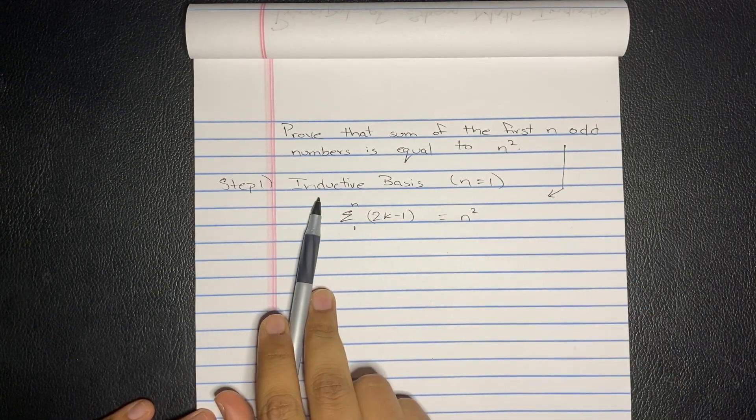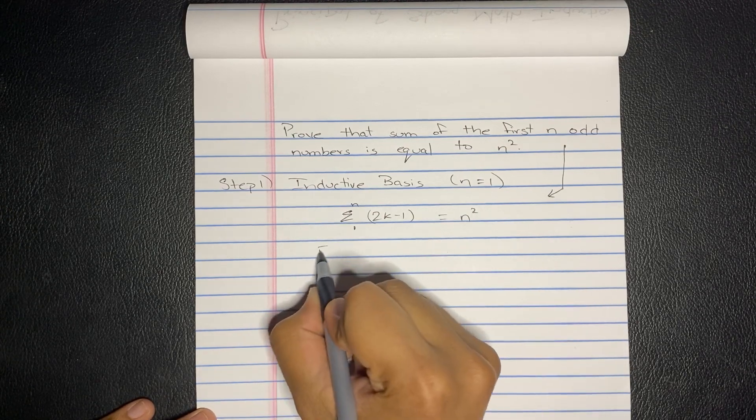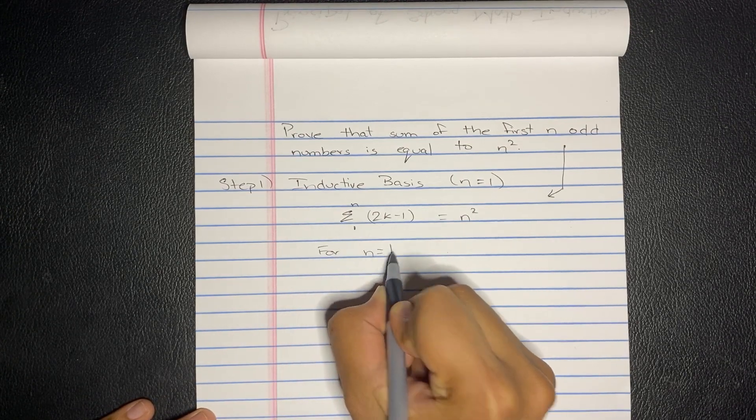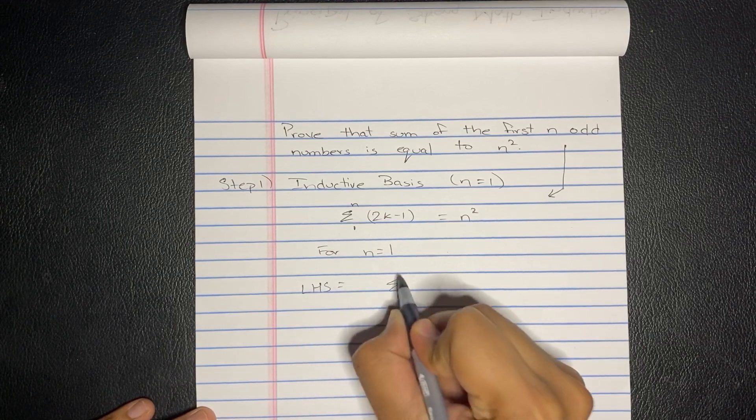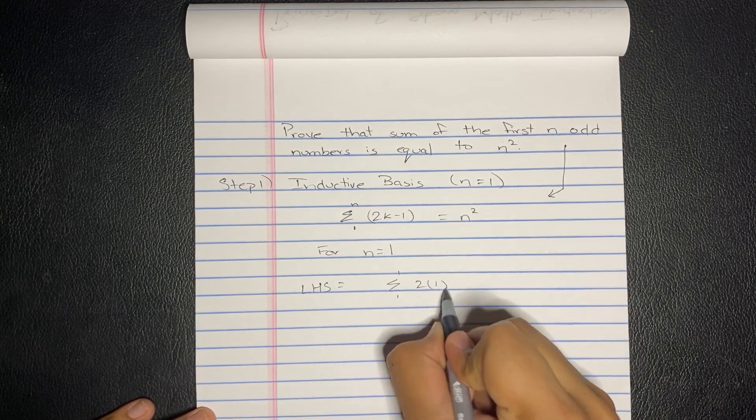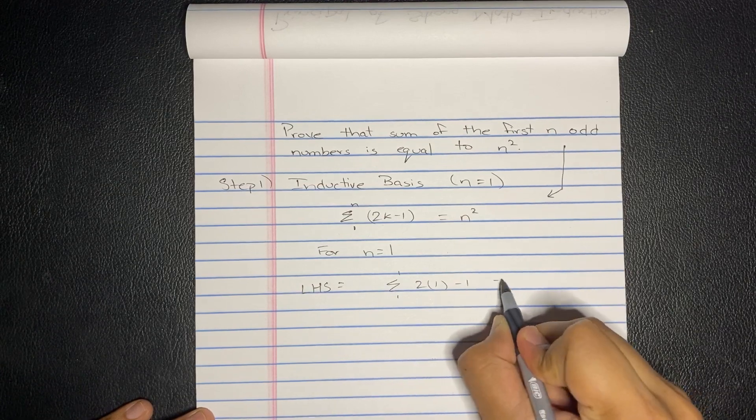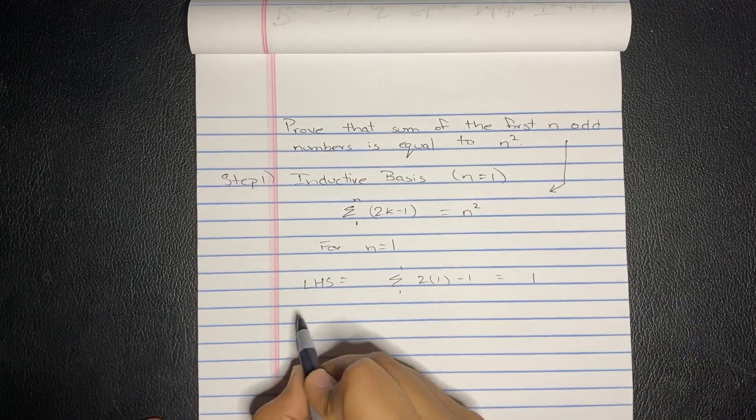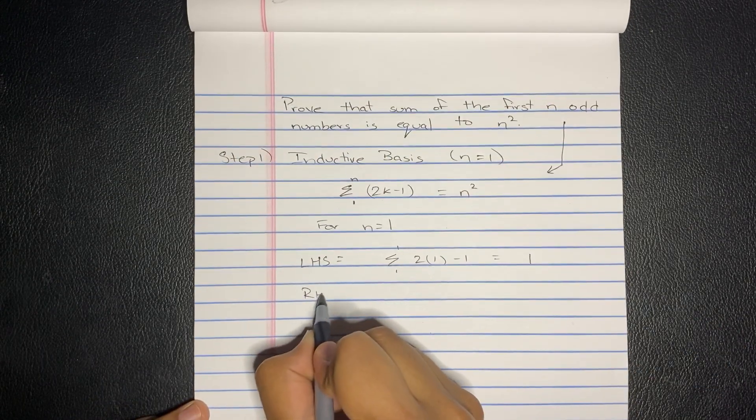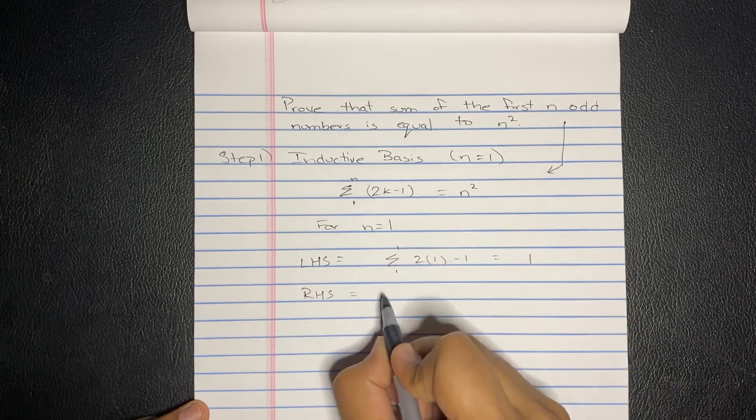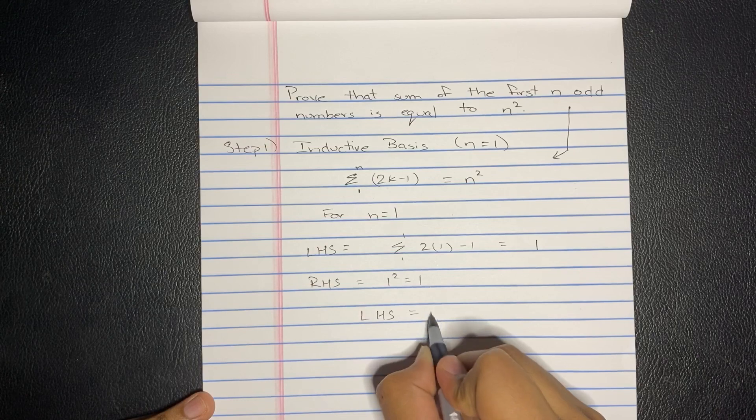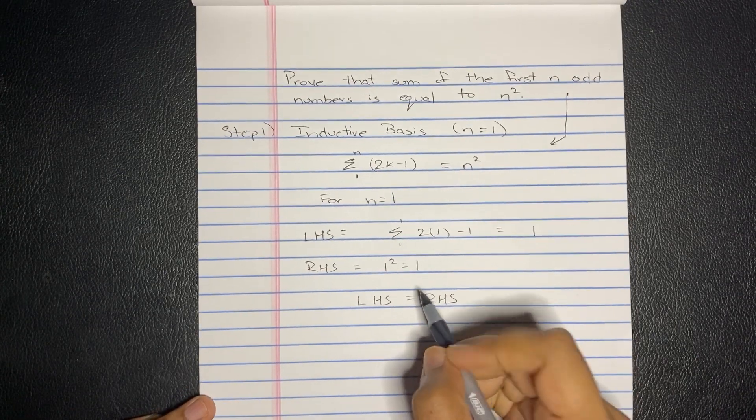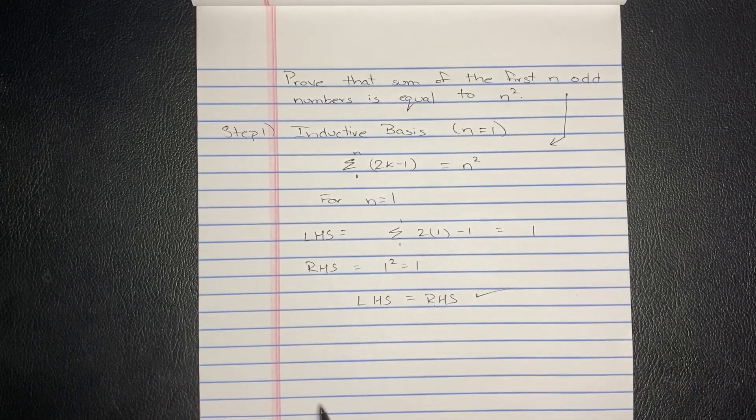So for the step one inductive basis, that means for n equaling 1, the left-hand side equals summation of 1 to 1 of 2 times 1 minus 1, which is equal to 1. Now the right-hand side equals n squared, which is 1 squared, equals 1. So since LHS equals RHS, that's good. So we did step one.